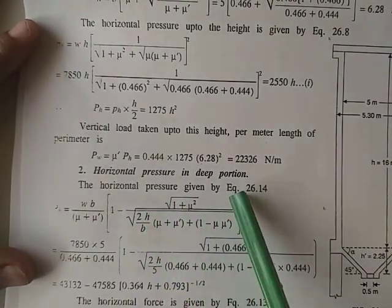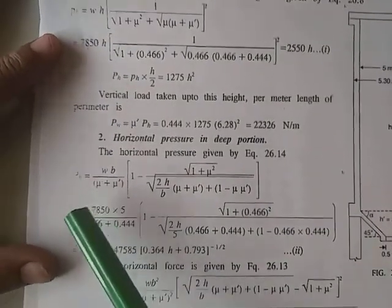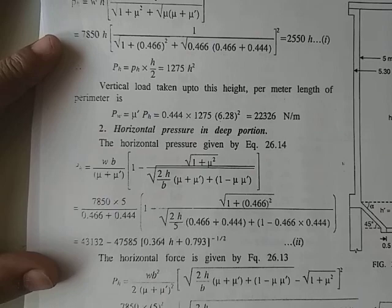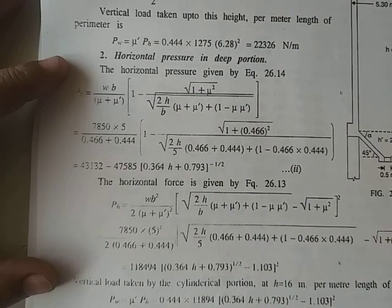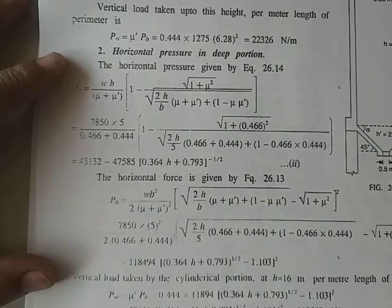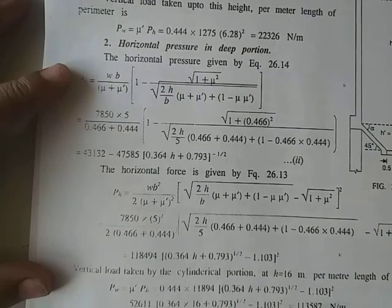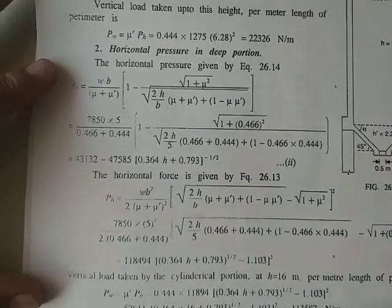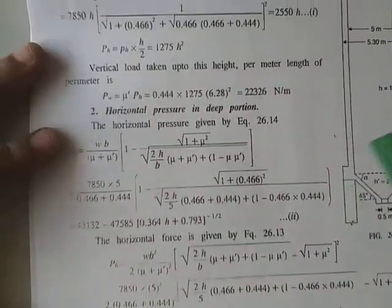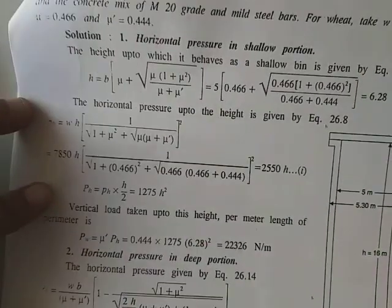Substituting values into the deep bin horizontal pressure equation gives: ph = 118948 × [√(0.364h + 0.79) − 1.103]². The total horizontal pressure at the base of the cylindrical portion comes out to be approximately 113587 N/m. These shallow and deep bin equations are applied to find vertical and horizontal pressures for use in wall design.